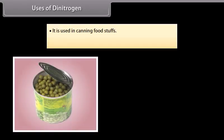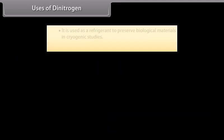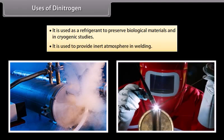The important uses of dinitrogen include: use in canning foodstuffs; manufacture of NH3 and calcium cyanamide; use as a refrigerant to preserve biological materials and in cryogenic studies; and providing an inert atmosphere in welding.